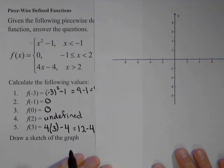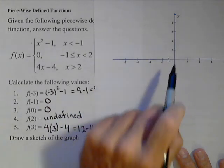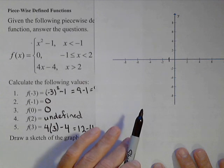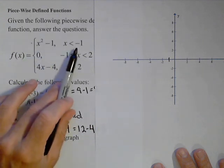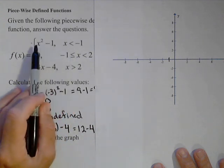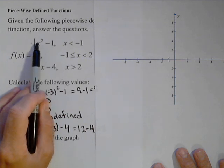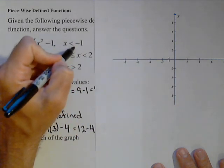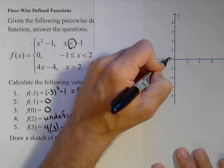So for x less than negative one, so negative one would be right here, so now I'm to the left, the graph looks like x squared minus one. Now, at negative one, you always want to find out what's going on at the endpoint. At negative one, if I were to plug negative one into here, I get negative one squared, which is one, minus one, which is zero. So it hits zero, but remember, it's strictly less than, so right now I'm going to use an open circle,